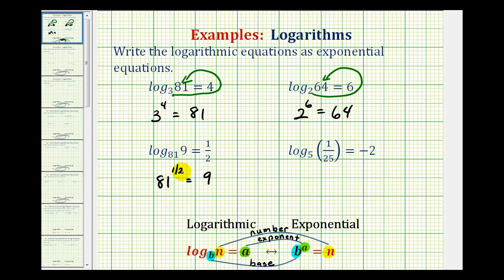Remember, raising something to the one-half power is the same as taking the square root. And since the square root of 81 equals nine, this checks. And again, 81 to the one-half power equals nine.